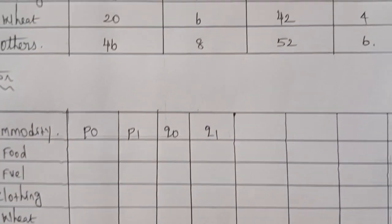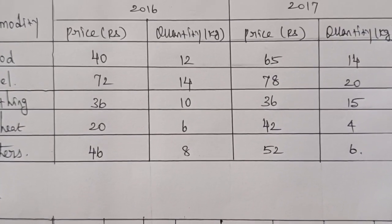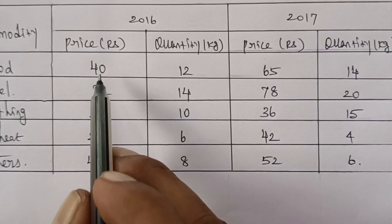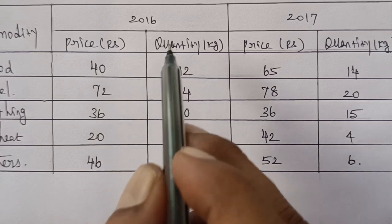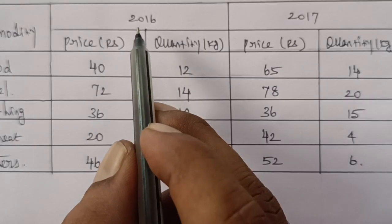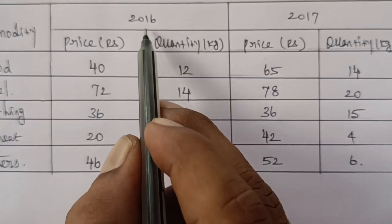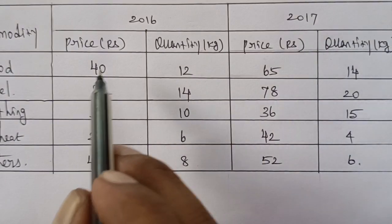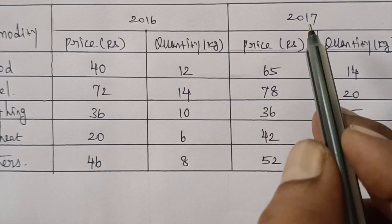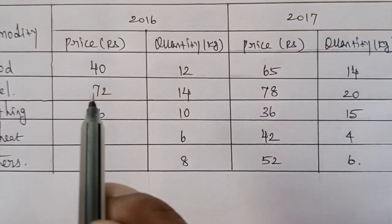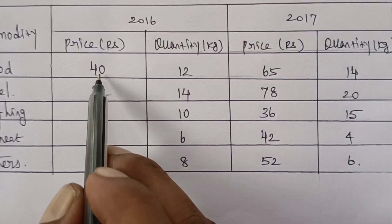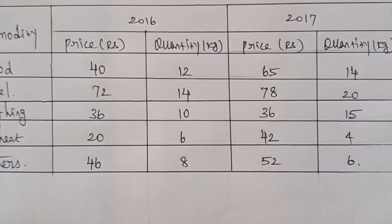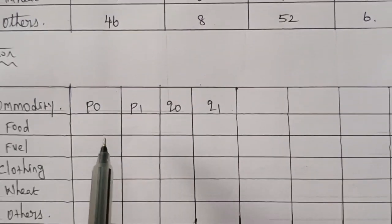The prices are for 2016 and 2017. The price columns are P0 and P1.